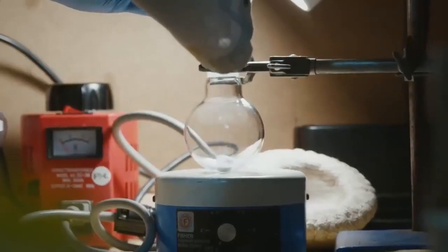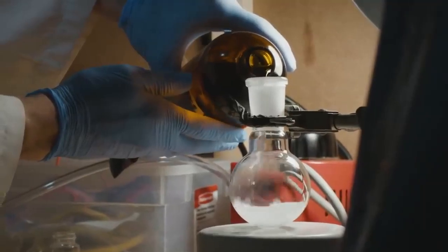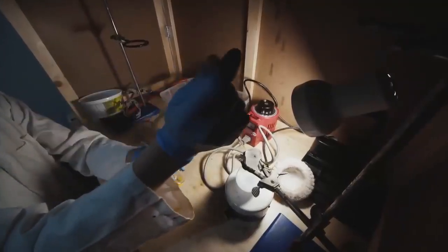Powdered sodium borohydride is added to a round-bottom flask and suspended in DCE. Pre-molar equivalents of glacial acetic acid are added dropwise.